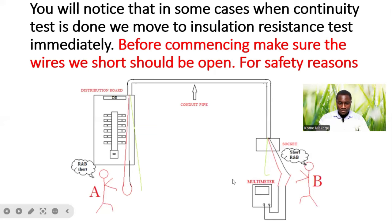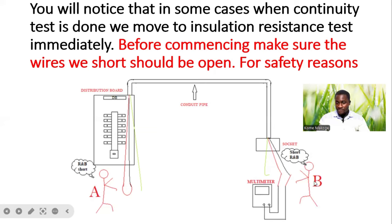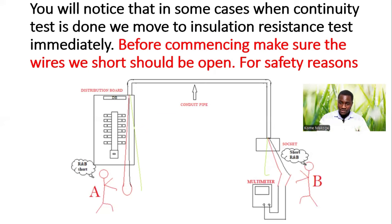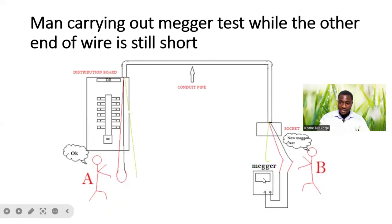Looking at the graphic, we have one person at the DB side and another person standing at the field side or at the socket outlet. The first person has done with the continuity test. He now moves to performing the mega test or insulation resistance test. However, the man at the field side is still carrying out a mega test while the other end of the wire is still shorted.